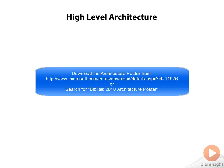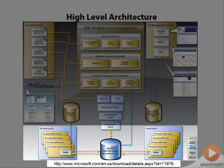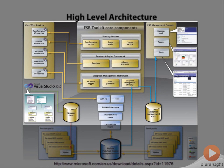Let's take a look at the high level architecture of the ESB Toolkit. This diagram represents the ESB Toolkit architecture. The key thing to point out here is that the bottom quarter of this diagram is the core BizTalk server components itself — the receive ports, the send ports, and the BizTalk message box clearly in the middle. The other three quarters of this diagram is all new components added as part of the ESB Toolkit.